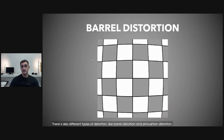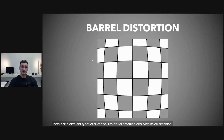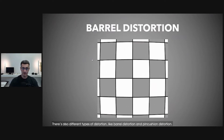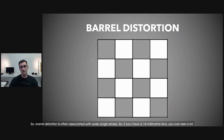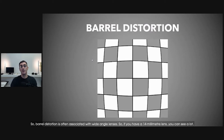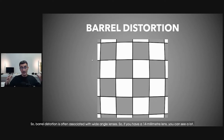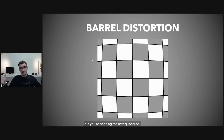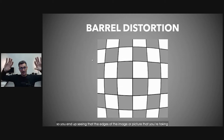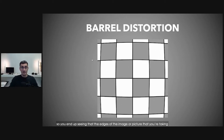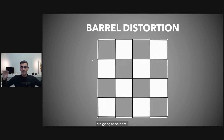There are also different types of distortions like barrel distortion and pin cushion distortion. Barrel distortion is often associated with wide angle lenses. So if you have like a 14 millimeter lens, you can see a lot, but you're bending the light quite a bit. So you end up seeing that the edges of the image or the picture that you're taking are going to be bent.